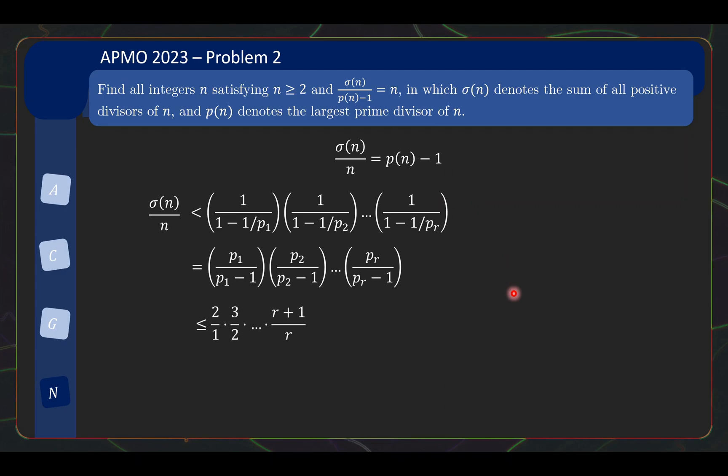So indeed, in the worst case scenario, you can bound this by 2 over 1, 3 over 2, 4 over 3, and so on, until R plus 1 over R, which is a telescoping product that gives you R plus 1. So this ratio is bounded by R plus 1, but you need this ratio to be the largest prime minus 1. You have R prime factors, and this is the R smallest one. Well, there's not much hope going on.